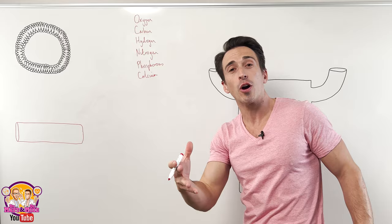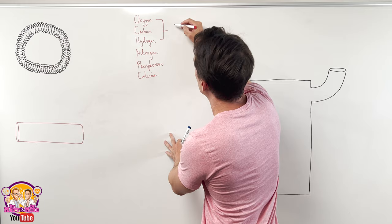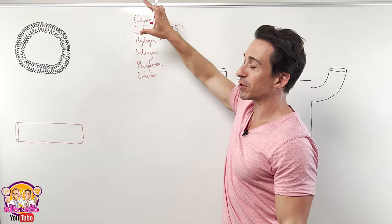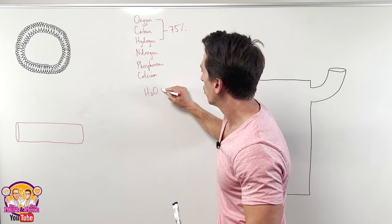And in actual fact, if I were to take two of these, oxygen and hydrogen, you'll find that they make up around about 75% of you. Most of the oxygen and hydrogen is actually snapped together in the form of H2O, which we know is water.